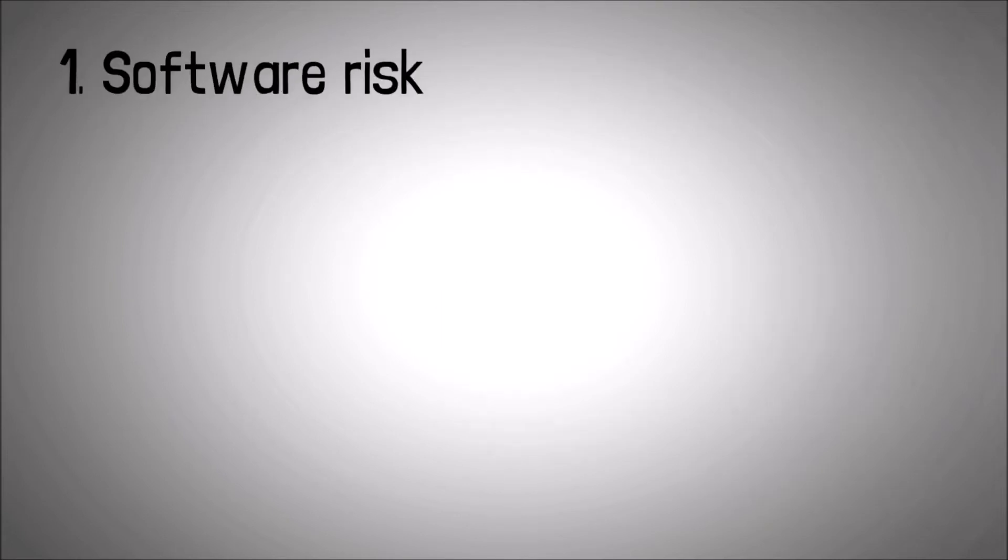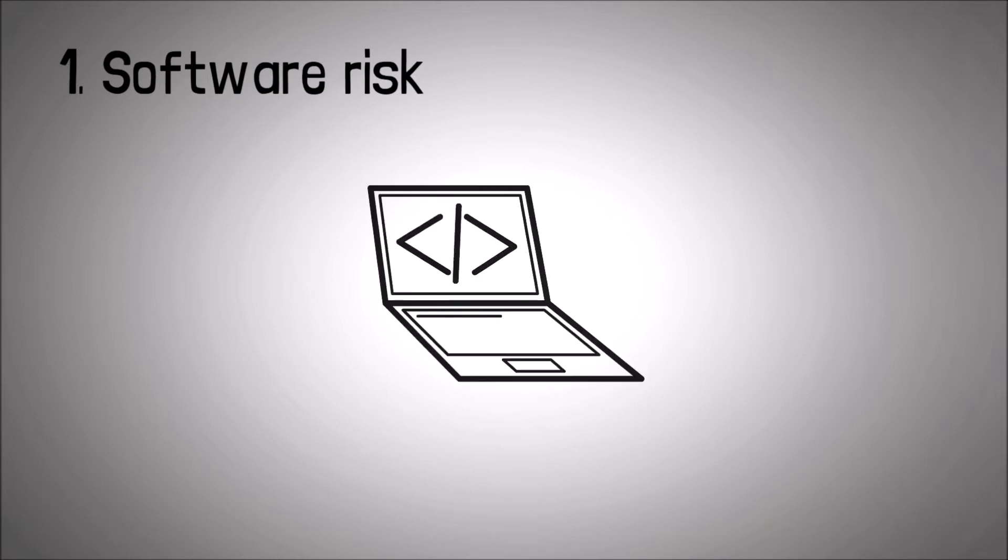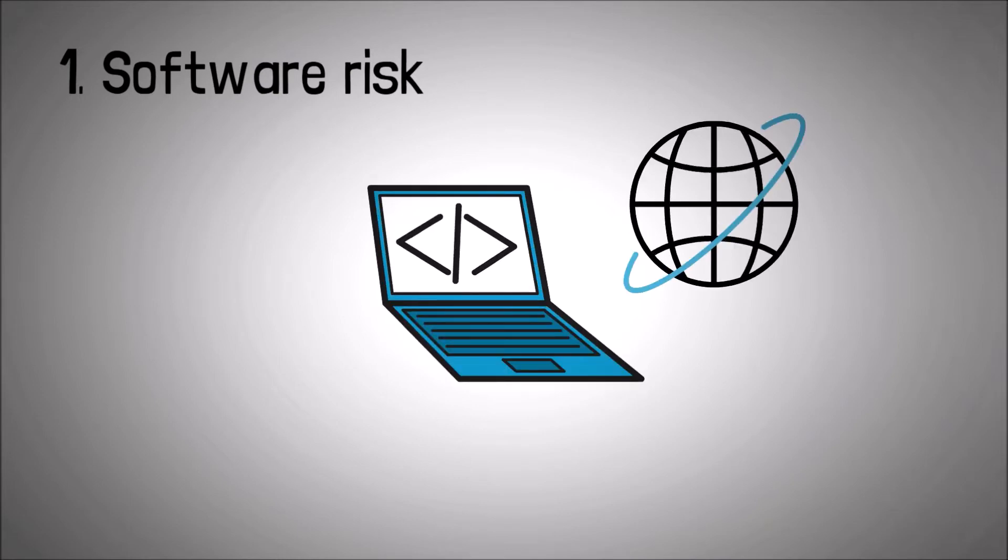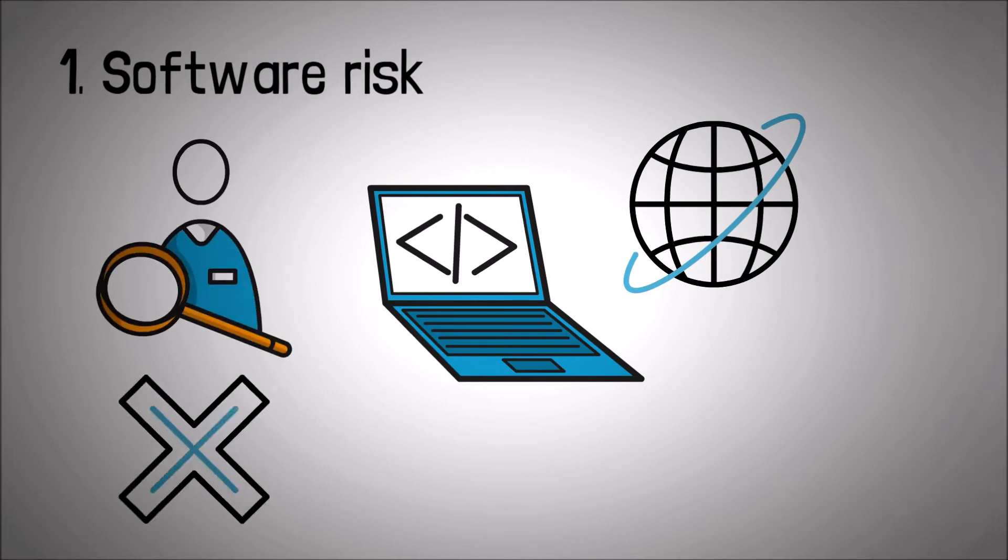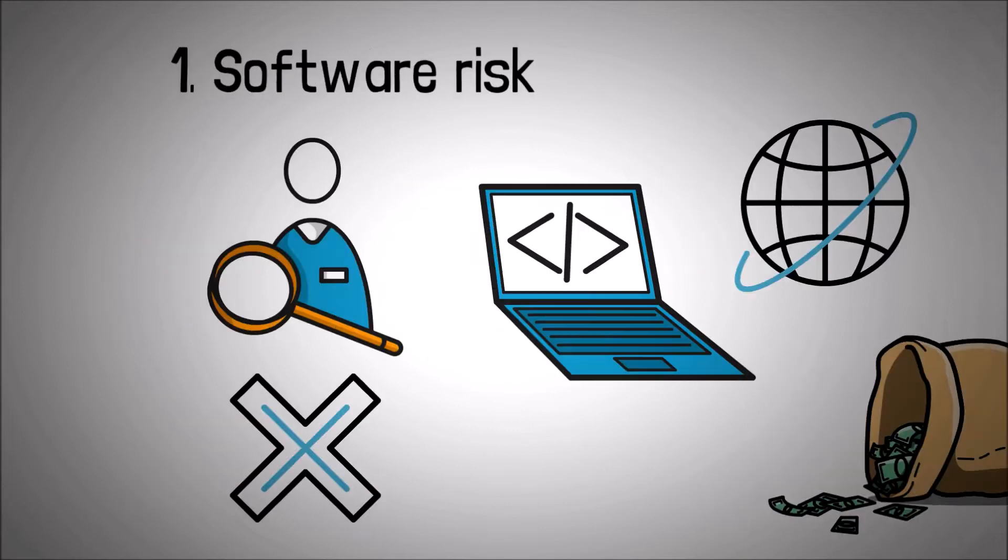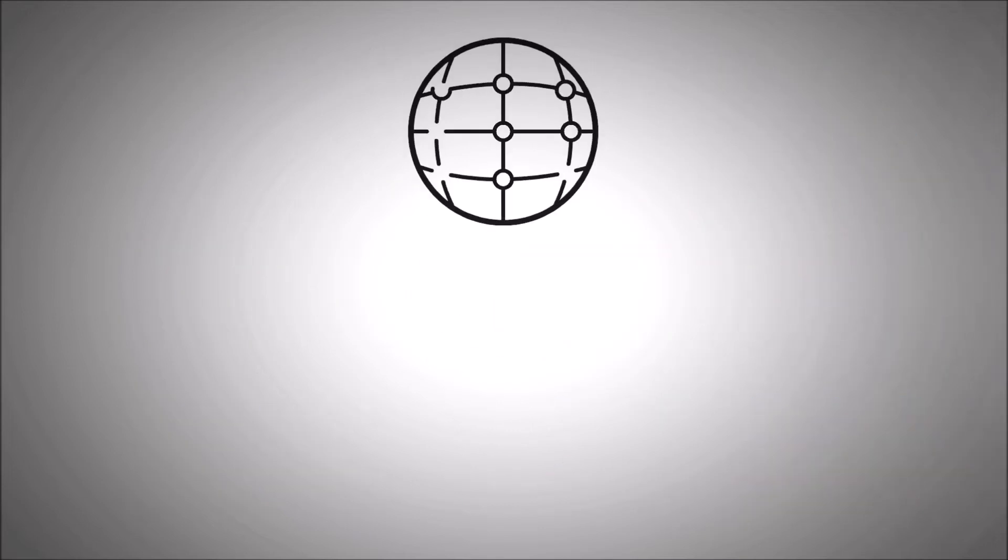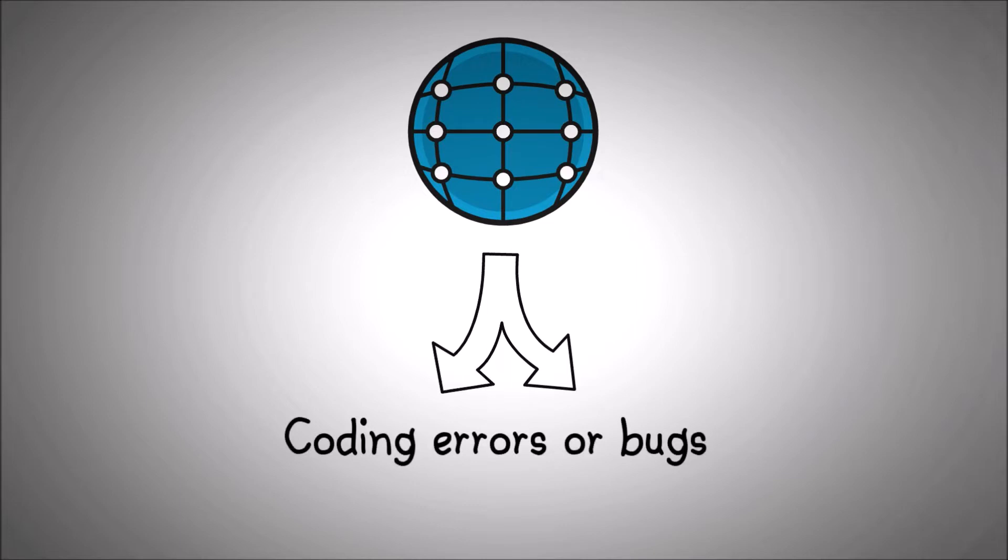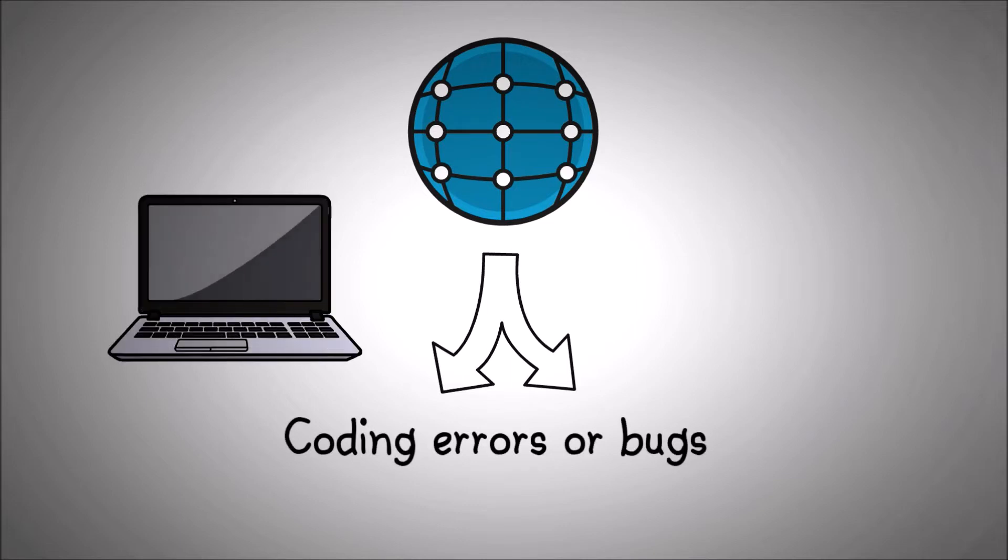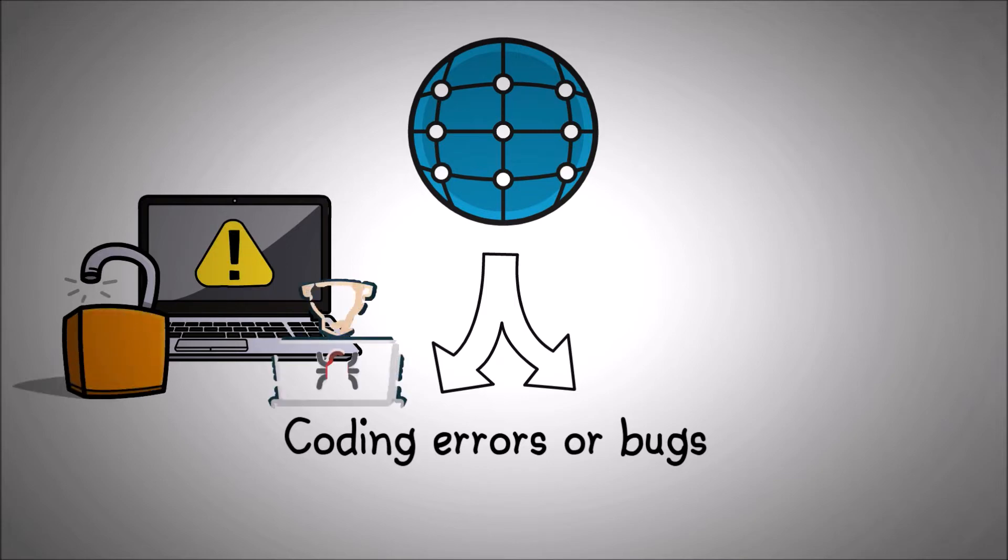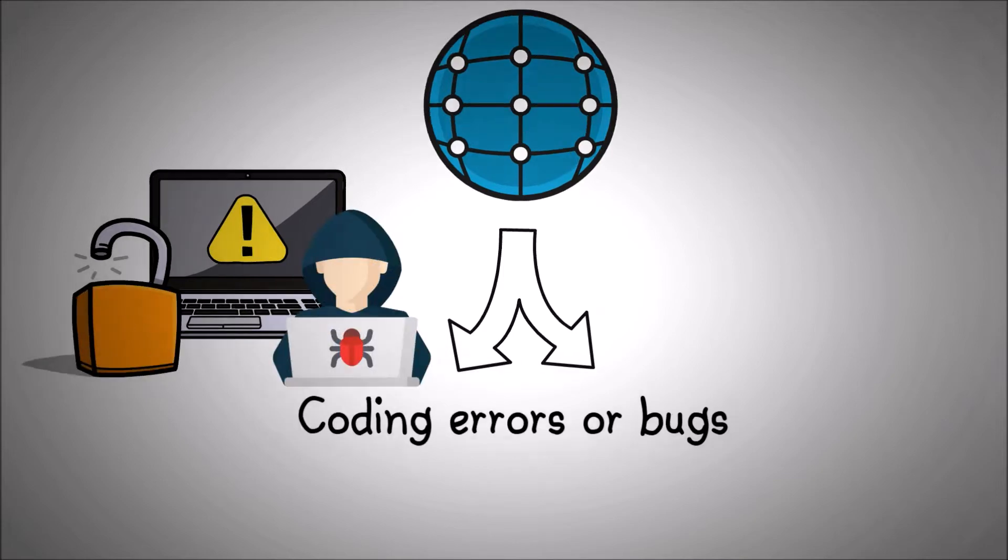There are three broad categories of risk in any DeFi project. The first is the software at risk. DeFi protocols are software applications that run on the internet, generally with very little human oversight and often with millions or billions of dollars flowing through them. Like all software, DeFi protocols have two main software risks: coding errors or bugs that may cause the software to malfunction and security vulnerabilities that allow hackers to break in and steal funds from the protocol.